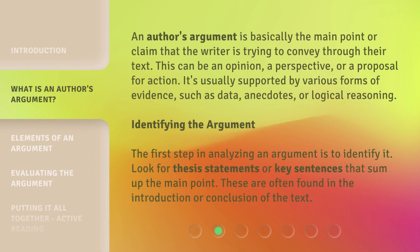An author's argument is basically the main point or claim that the writer is trying to convey through their text. This can be an opinion, a perspective, or a proposal for action. It's usually supported by various forms of evidence, such as data, anecdotes, or logical reasoning.